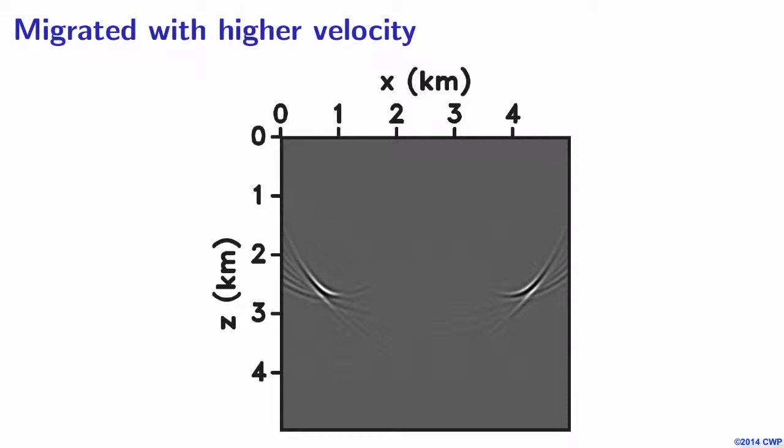Of course, we can obtain a velocity model from the reflection. But if we have a favorable distribution of diffractions in the data, then we can obtain a useful constraint on this velocity estimation process.